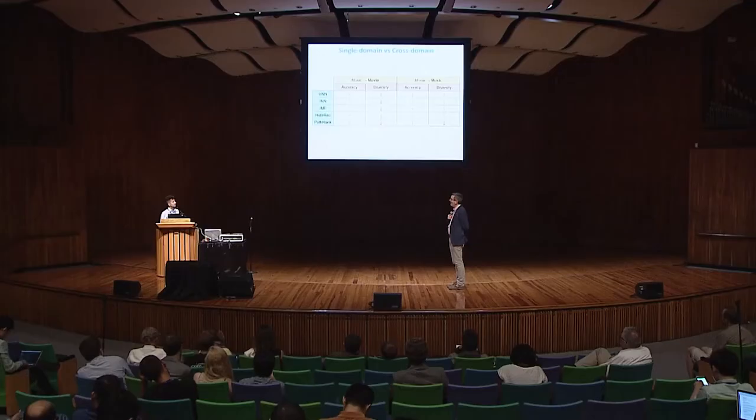I presume that this would depend a lot on what domains you're crossing as well — maybe there's some sort of similarity between movie and music tastes, but not so much between other domains. Yes, maybe the relationship between the domains is not symmetric.